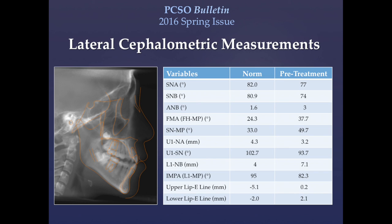Cephalometrically, the patient has a high mandibular plane angle with an FMA of 38 degrees and an SNMP angle of 50 degrees. She has bimaxillary retrusion with an ANB of 3 degrees and a Wits of minus 7.9 millimeters, indicating a class 3 malocclusion with downward and backward rotation of the mandible. Her maxillary incisors are slightly upright and retruded, and her lower incisors are also upright but more anteriorly positioned than the norm.